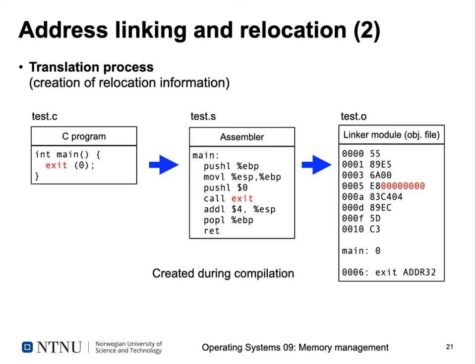Let's look at a simple example of the translation from C code to an object file (linker module). We have a simple C program whose main function just calls the libc exit function with a parameter of zero. This is translated by the compiler to x86 assembler. The key instruction requiring an absolute address is the call instruction, which calls the libc exit function somewhere in memory. All other instructions use register or immediate parameters and don't access absolute addresses.